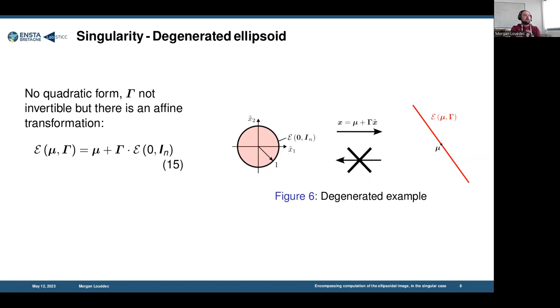About the degenerated ellipsoid, that can't be defined by using the quadratic form anymore, but we can still consider the affine transformation to define them. A degenerated ellipsoid is a transformation of the unit sphere, but this transformation is not bijective. But we will still use this transformation for the theory.